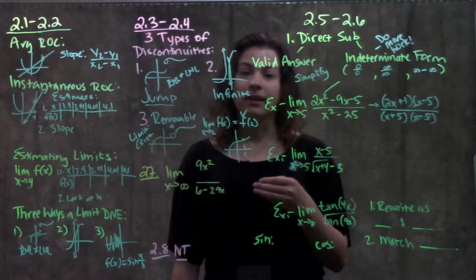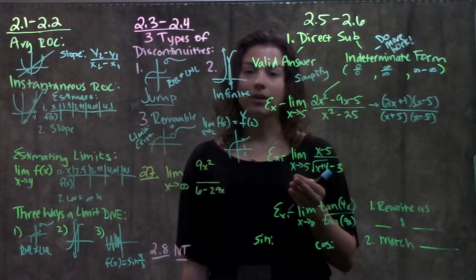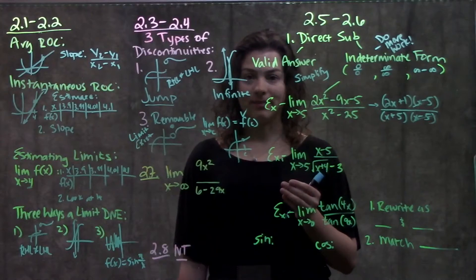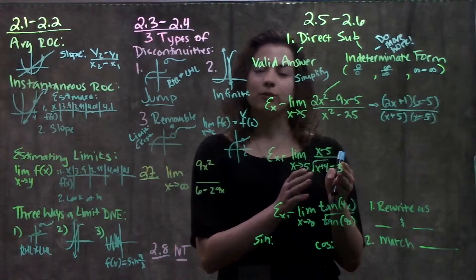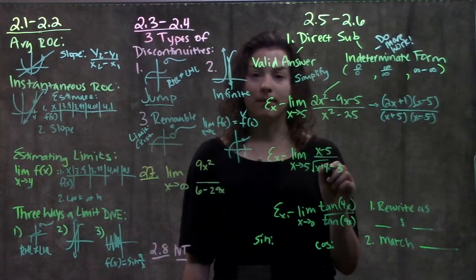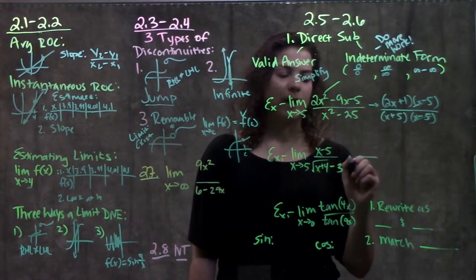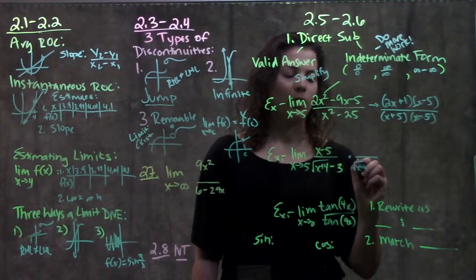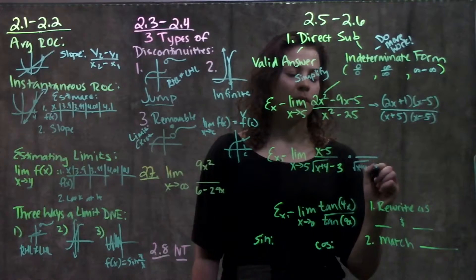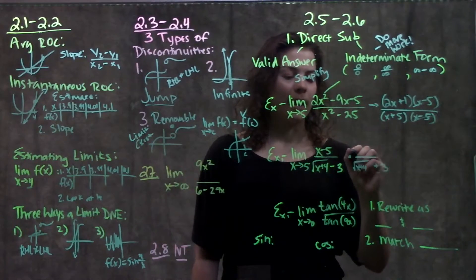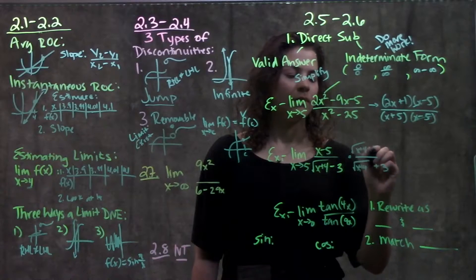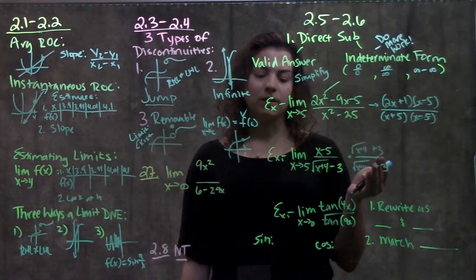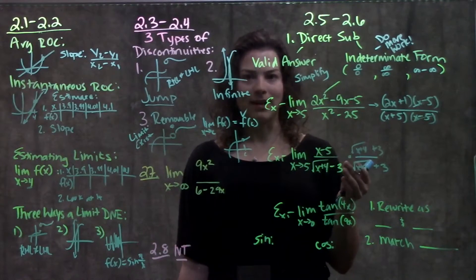Next type of function that we see is one involving radicals. Whenever you see a radical, you want to think conjugate. Multiply both the top and the bottom by the conjugate. The conjugate is just whatever this radical term is with the sign in the middle flipped. In this case, we'd multiply both the top and the bottom by the conjugate, which is radical x plus 4, and instead of a minus, I'm going to put plus 3. Whatever I do to the bottom, I have to do to the top. If I multiply this entire fraction by this conjugate, hopefully something will cancel, and I'll be able to try a direct substitution again and get a valid answer.